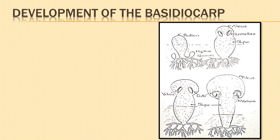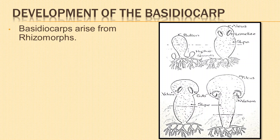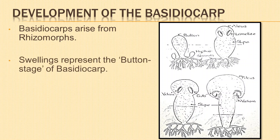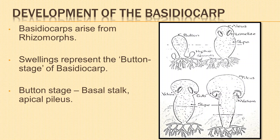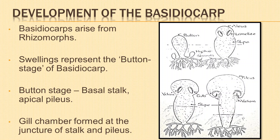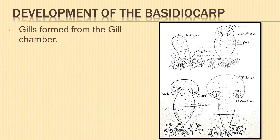The basidiocarps arise as tiny white apical swellings from the rhizomorphs during favorable conditions. They enlarge into round structures representing the button stage of the basidiocarp. At the button stage, the developing basidiocarp is differentiated into a basal bulbous part representing the stalk region and an apical hemispherical region which later forms the pileus. A ring-like cavity called the gill chamber is formed at the juncture of stalk and pileus. From the roof of the gill chamber arise flat plates of tissues forming the gills.